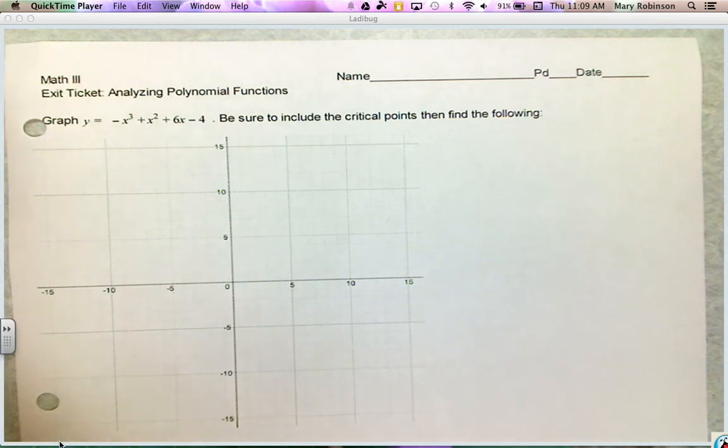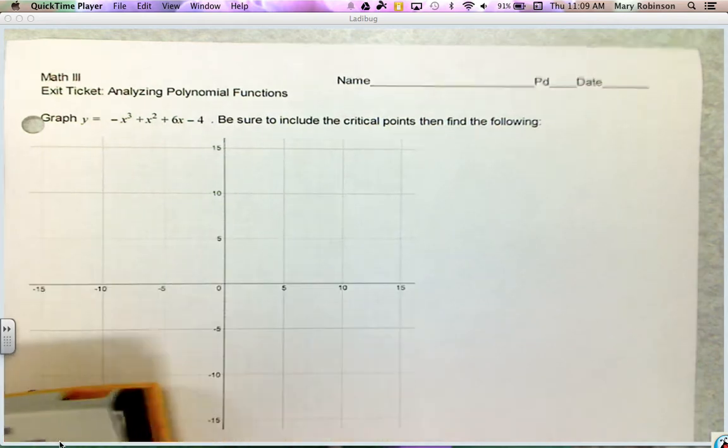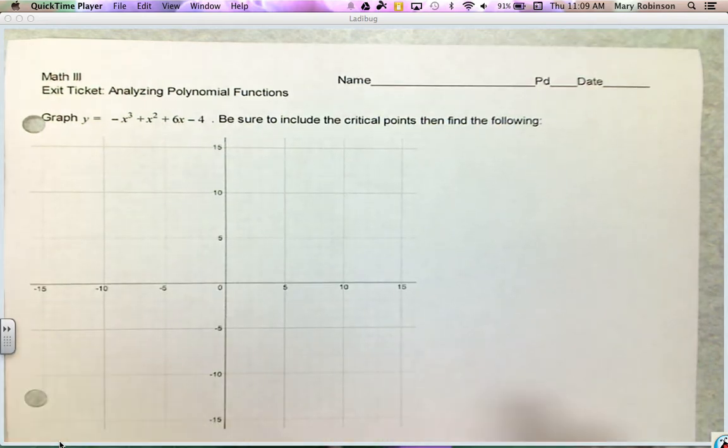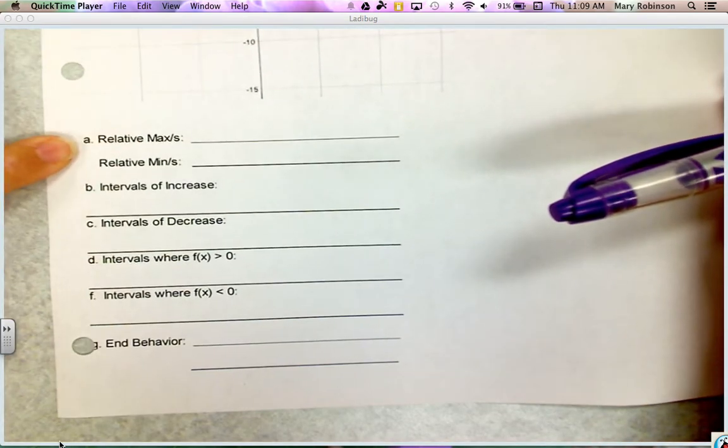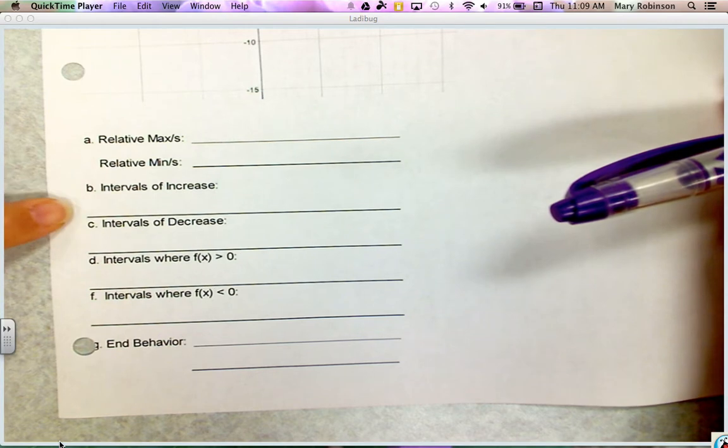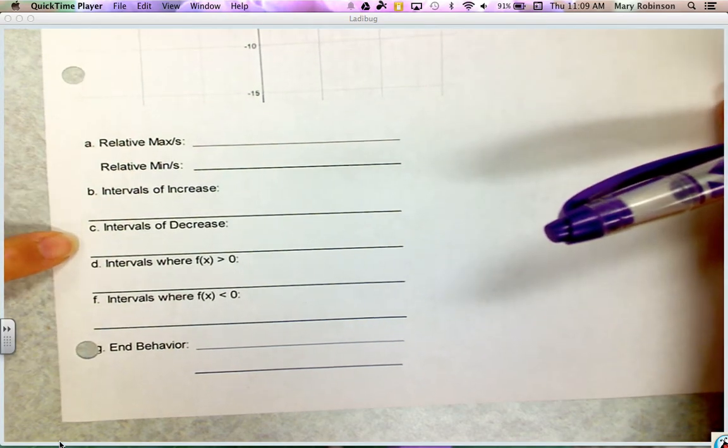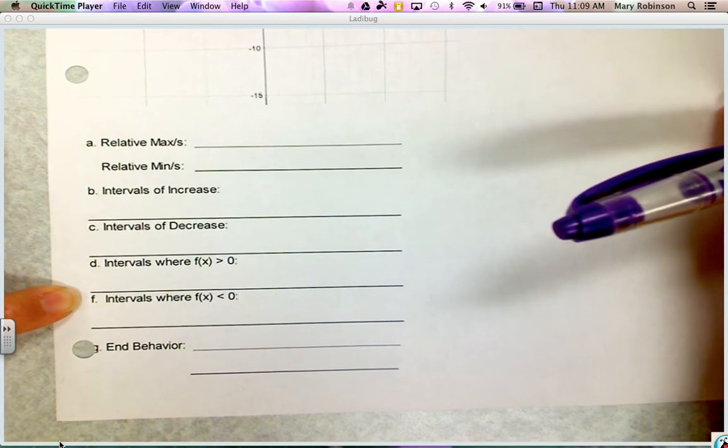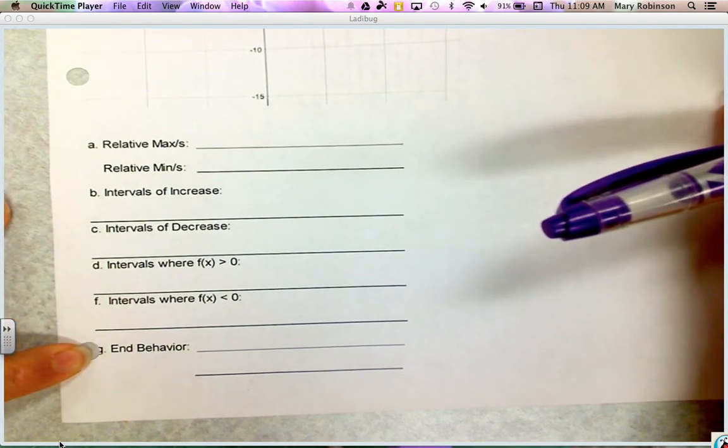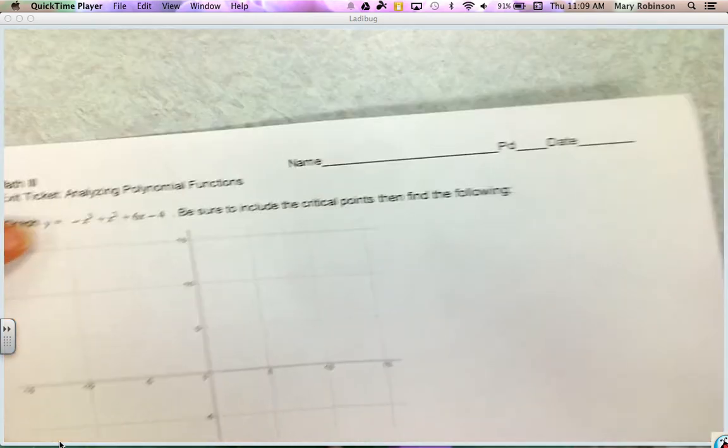Hello, this video is to go over the assignment on analyzing polynomial functions. For this one, you're given a cubic polynomial and you're asked to graph it and identify characteristics which include the relative max and mins, increasing and decreasing intervals, intervals where the graph is above and below the x-axis, and end behavior.